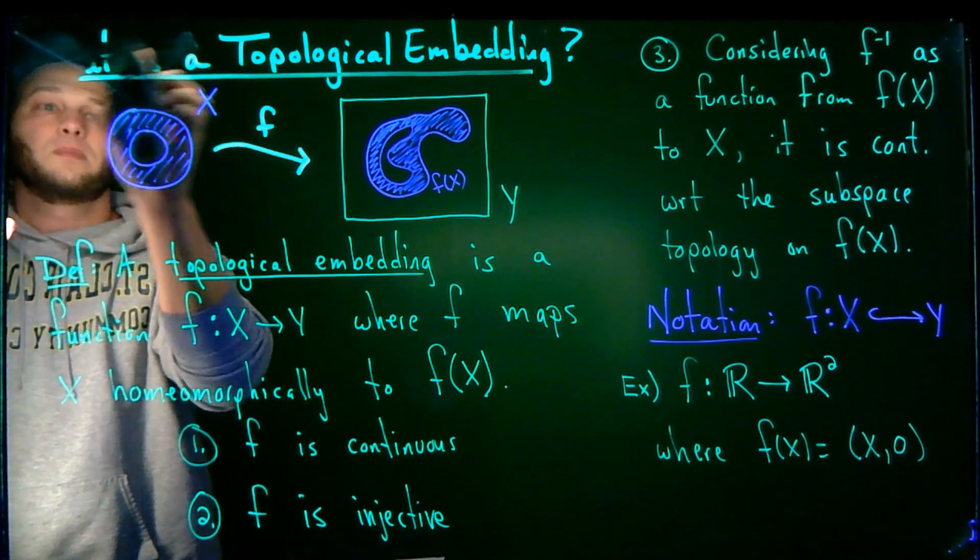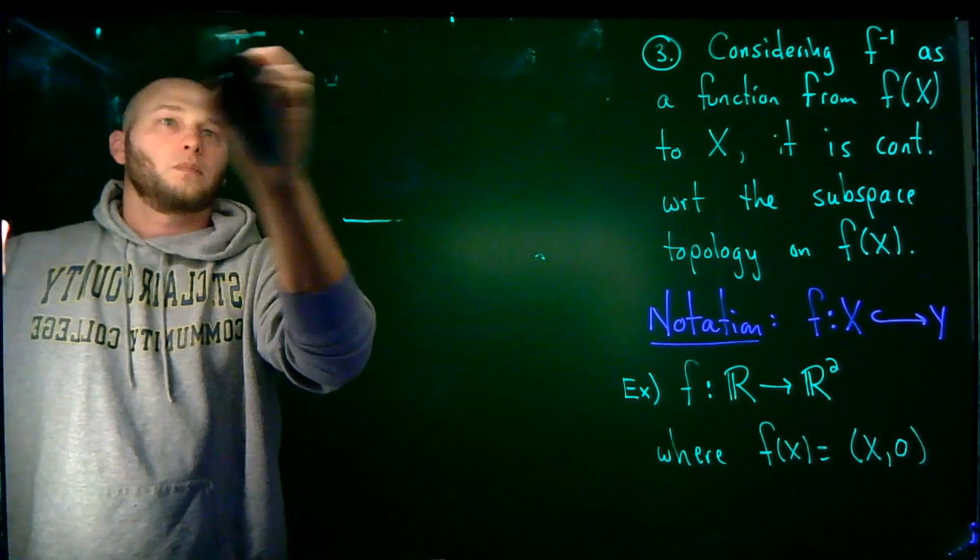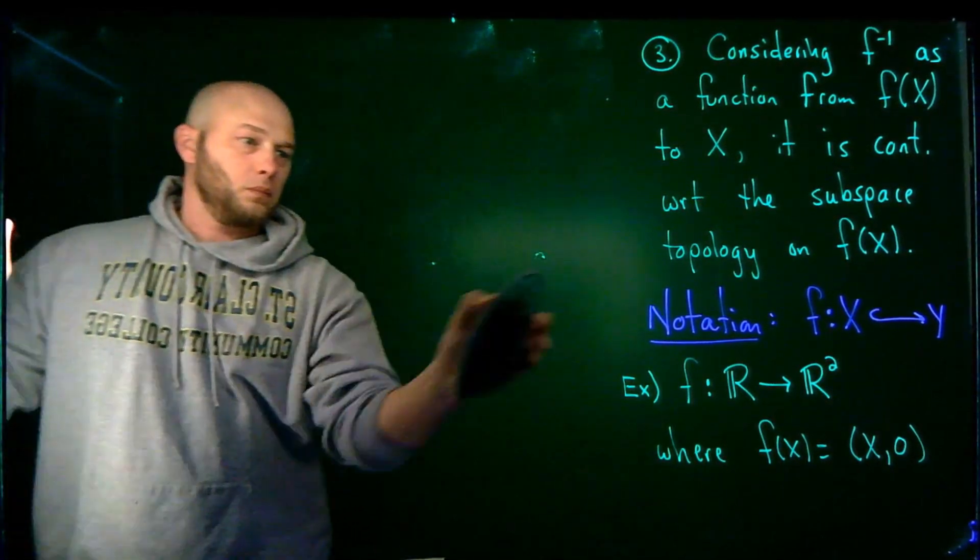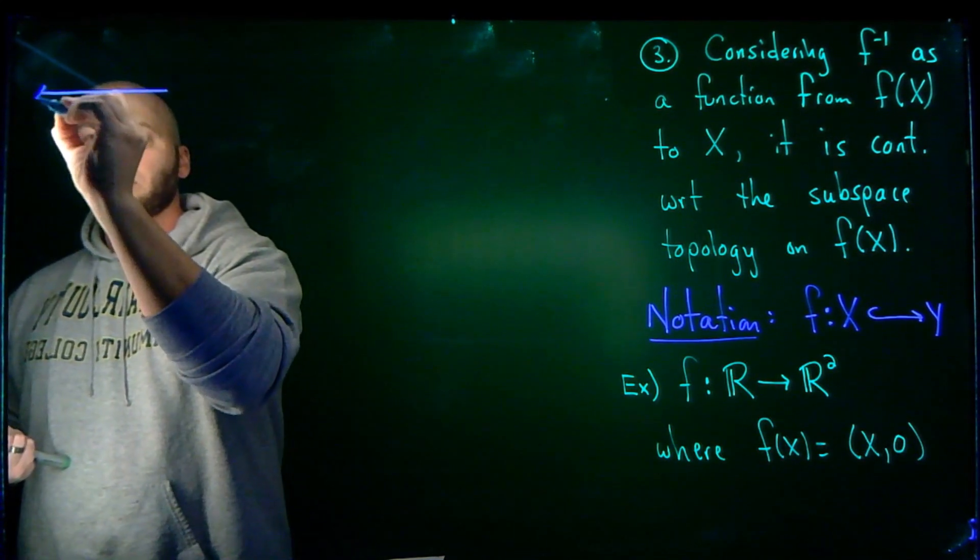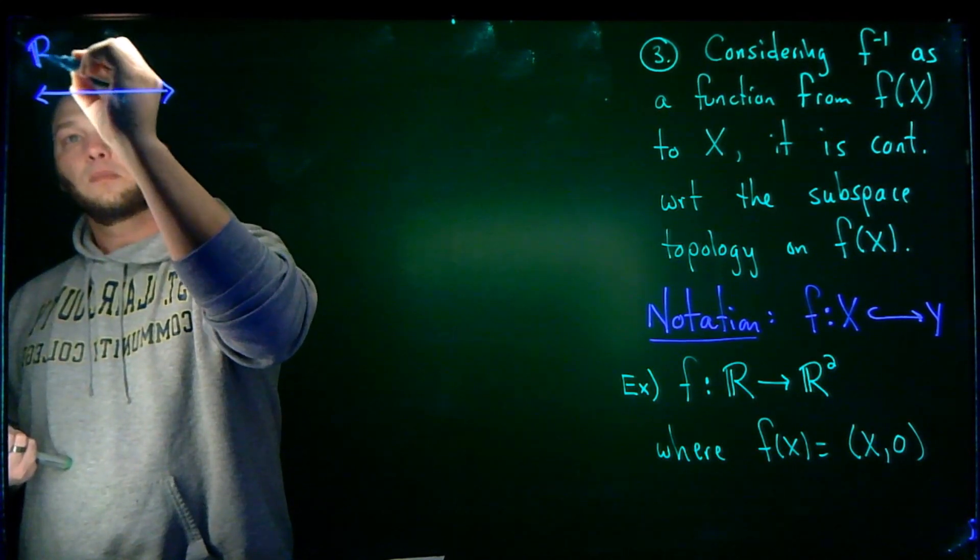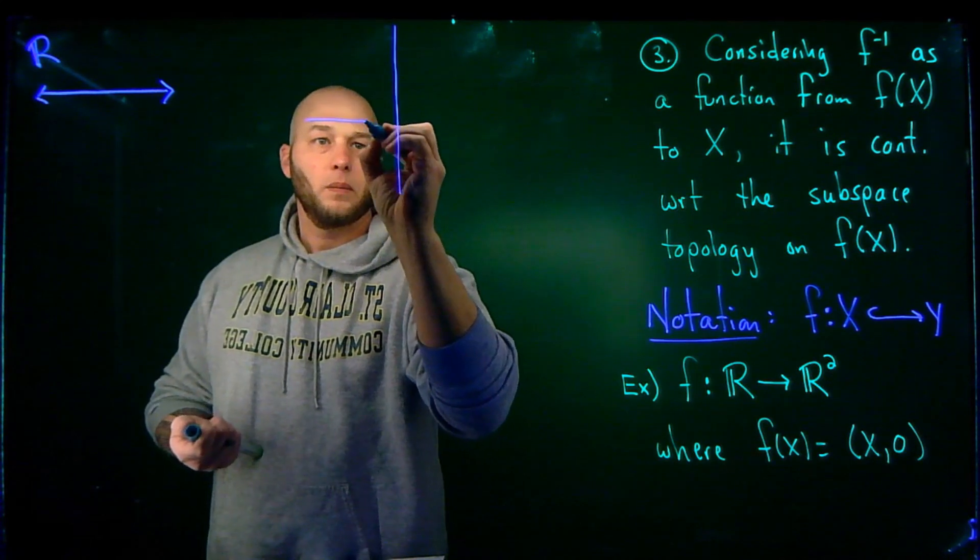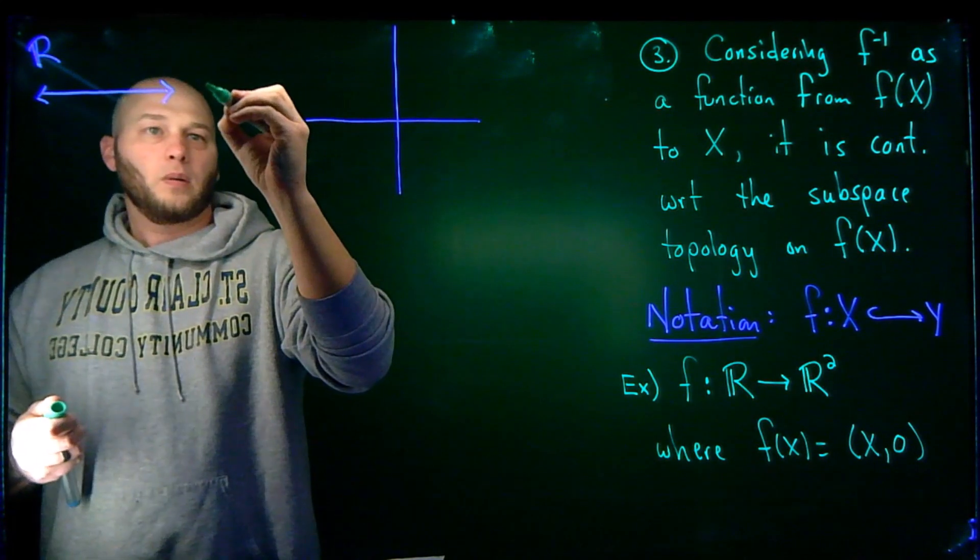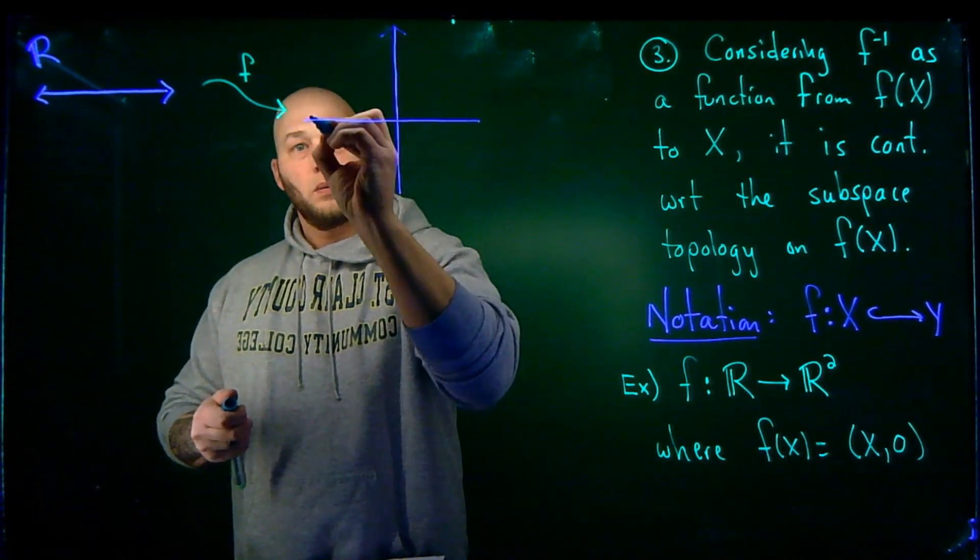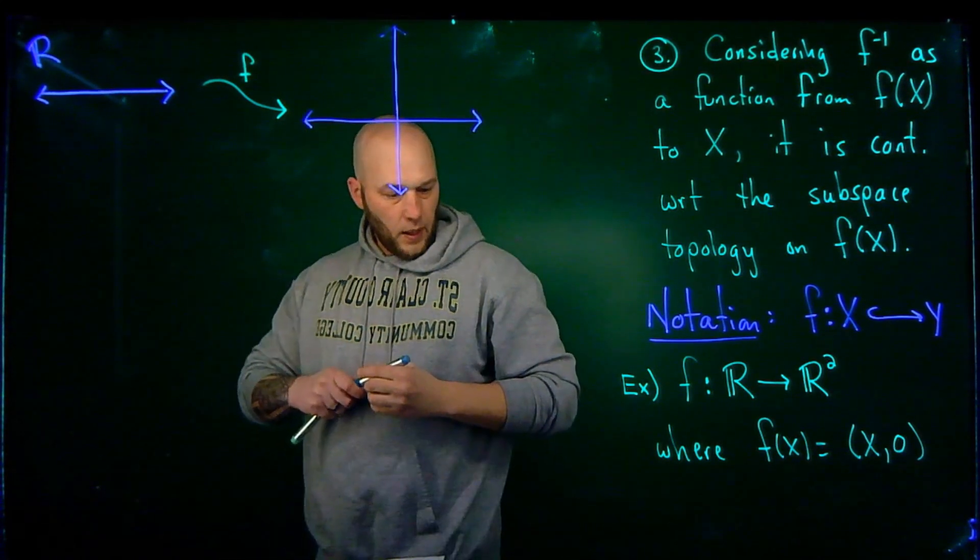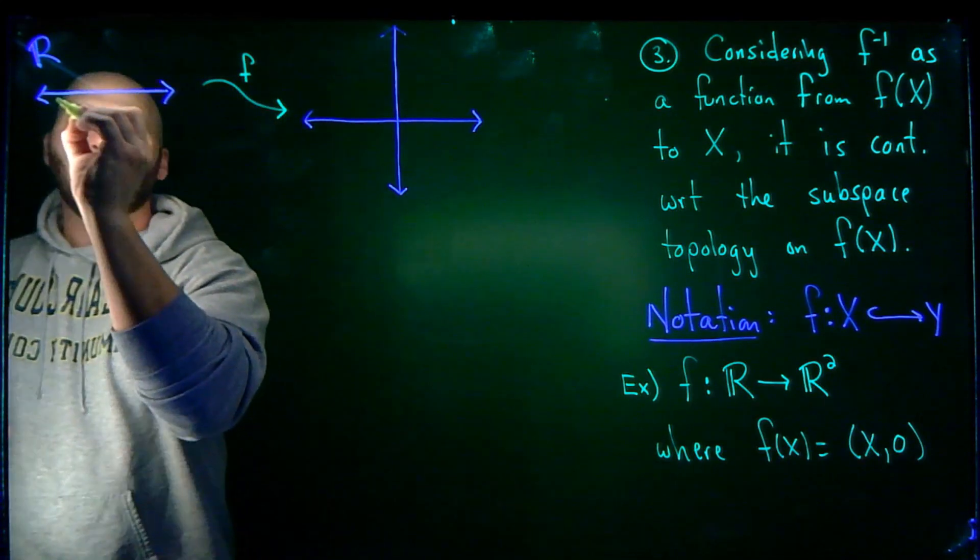So let me erase this side over here, and let's see what this is doing. If I look at a visual for this, so I'm taking the real line, and I am mapping that to the plane using this function F.